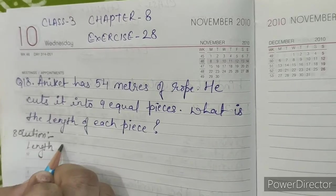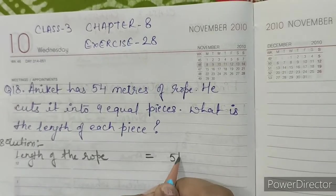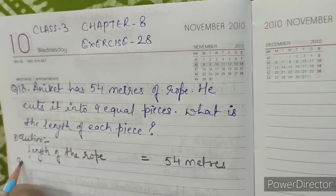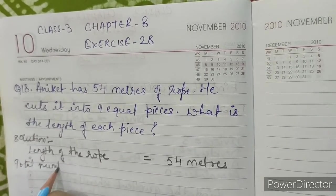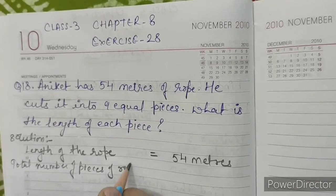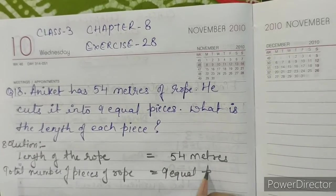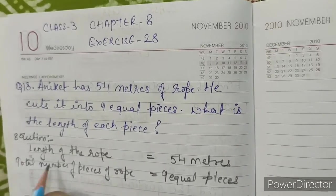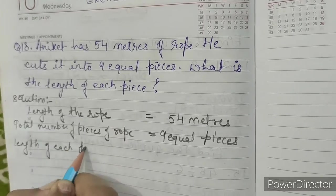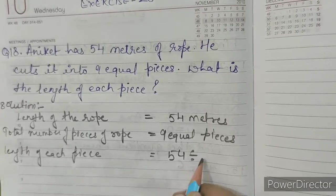Length of the rope equals 54 meters. Total number of pieces of rope equals 9 equal pieces. Length of each piece equals 54 divided by 9.